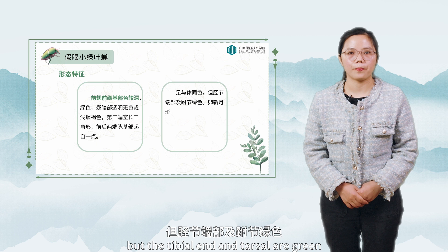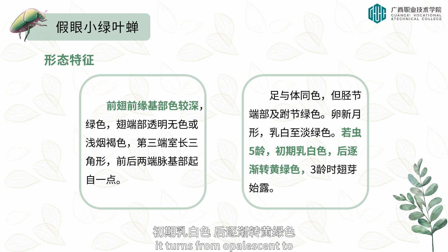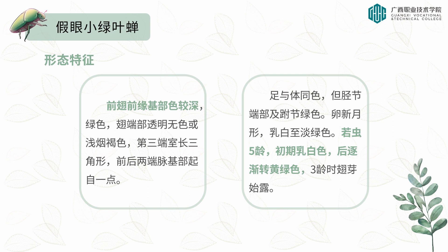The feet are the same color as the body, but the tibial end and tarsal segments are green. The egg is crescent-shaped and milky white to light green. The nymph has five instars, turning from opalescent to yellowish green gradually after the initial stage, with wing buds beginning to appear at the third instar.